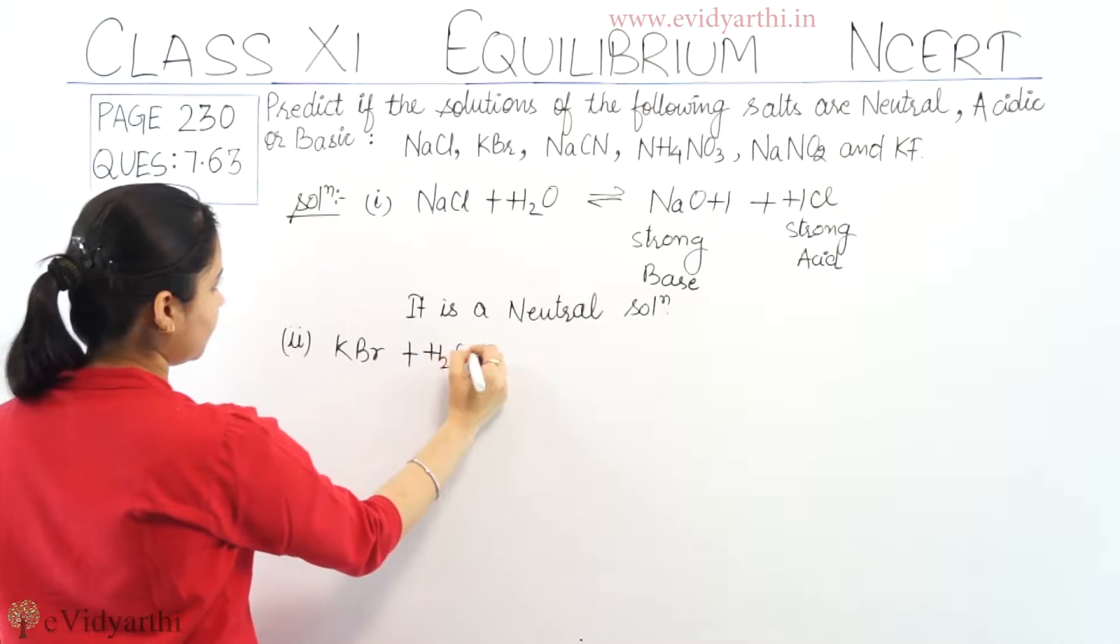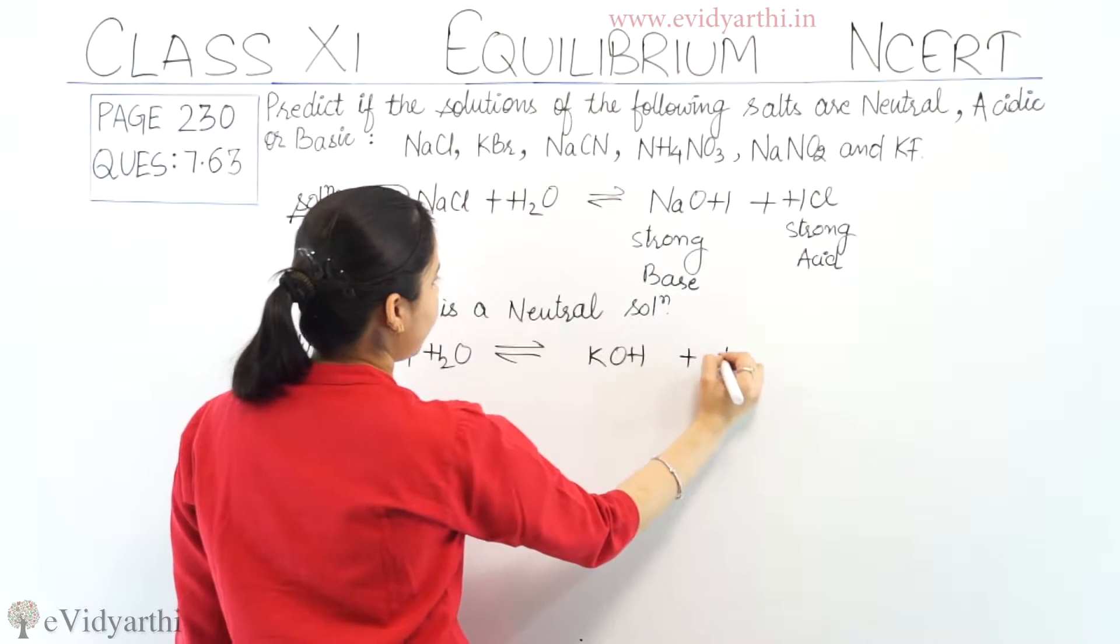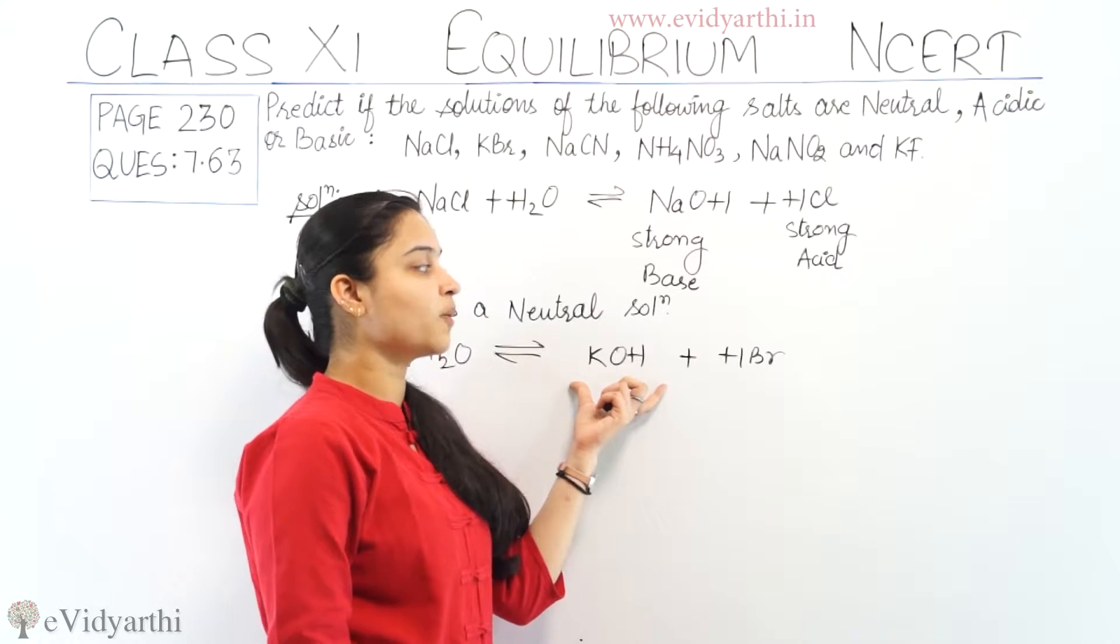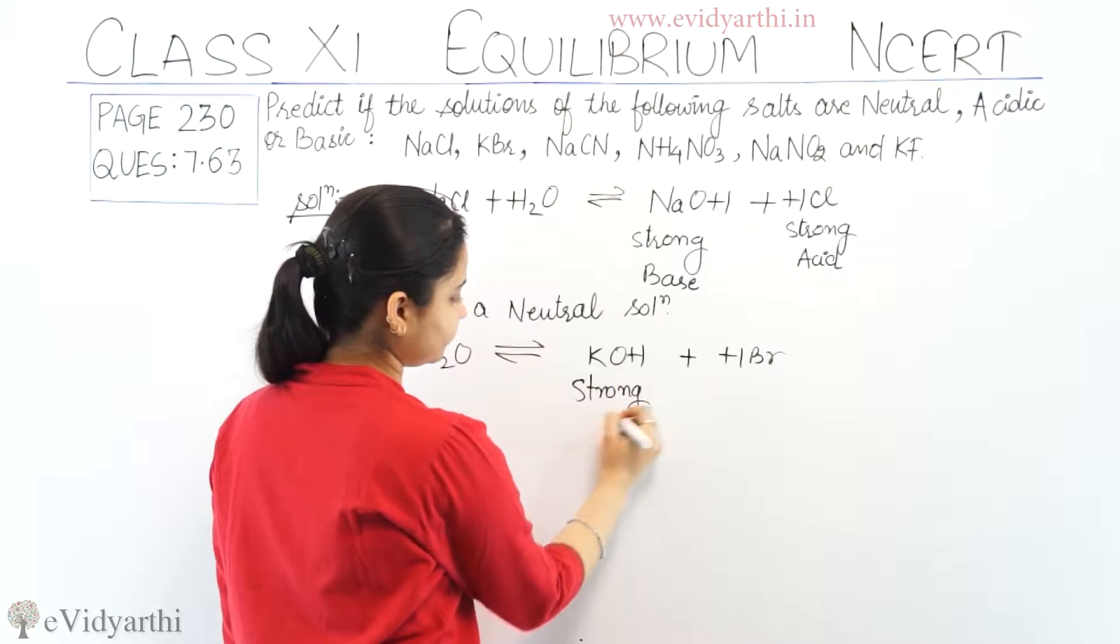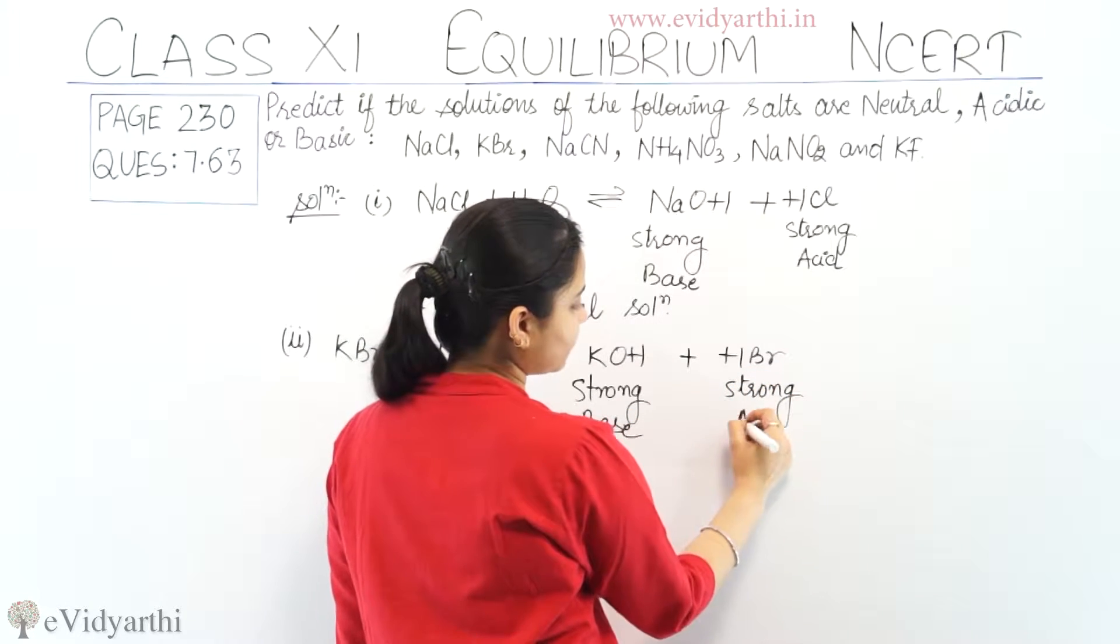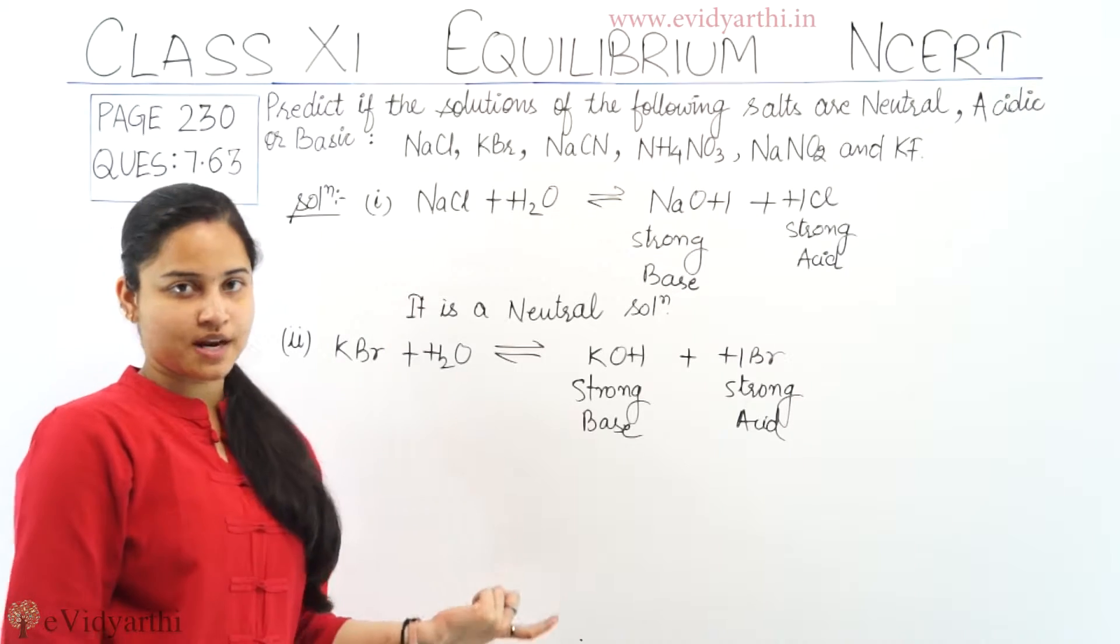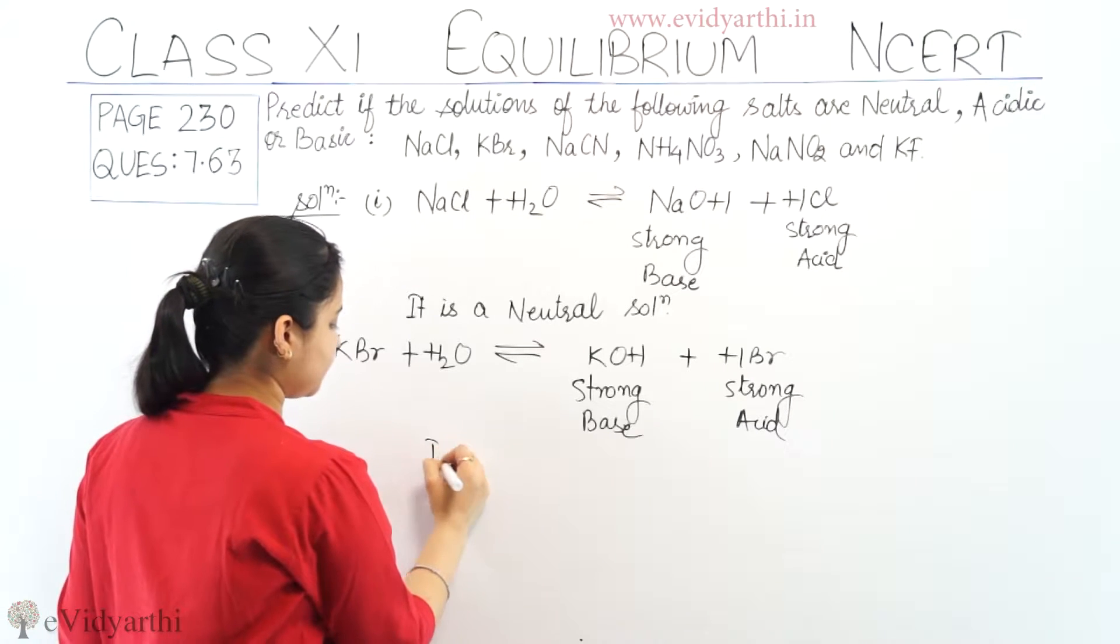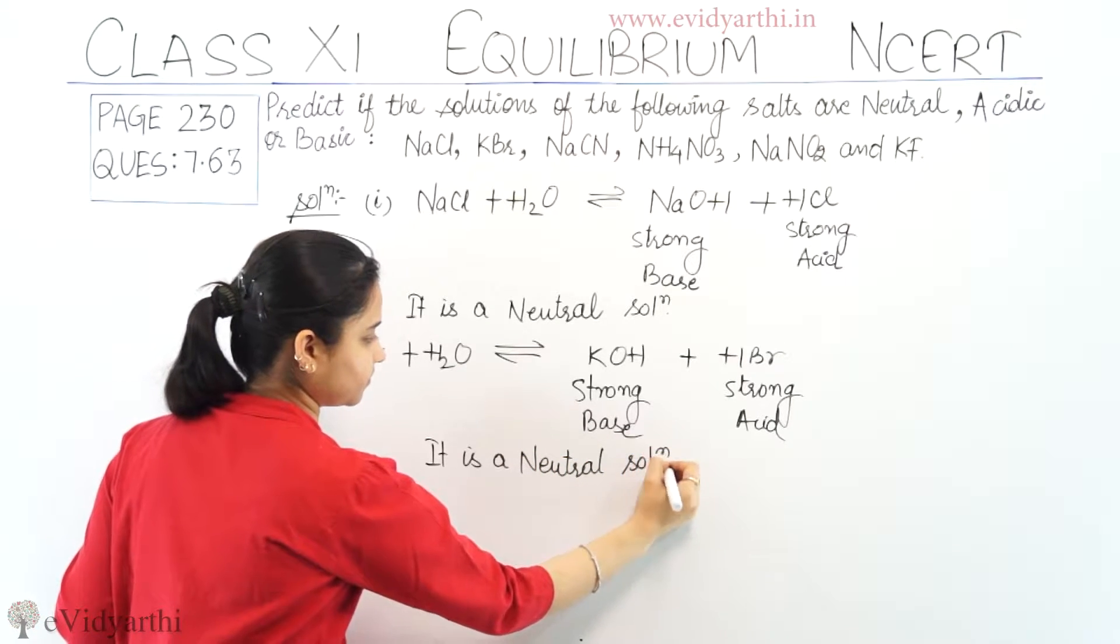It is a neutral solution. KBr plus water, it became KOH, potassium hydroxide, plus HBr. I want to tell you that KOH is a strong base and HBr is a strong acid. If I am getting a solution which is having a strong base as well as a strong acid, the solution is a neutral solution.